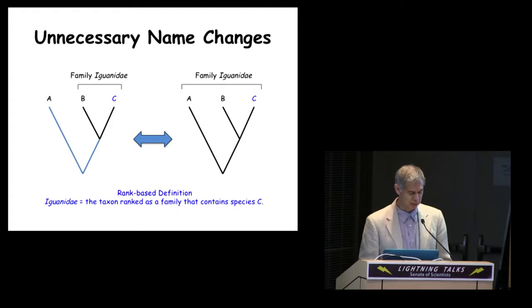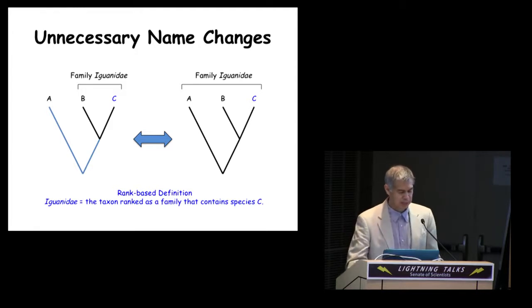On the left, the smaller clade is ranked as a family, on the right, the larger one, and this is a subjective decision. Because the name in this example is defined as the taxon that's ranked as a family and contains species C, that name shifts from one clade to the other, depending on which ranking scheme is adopted.